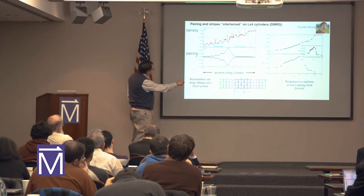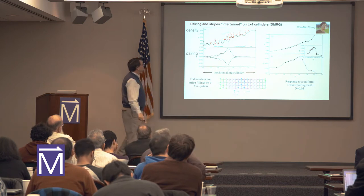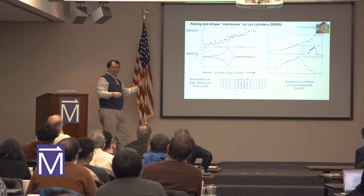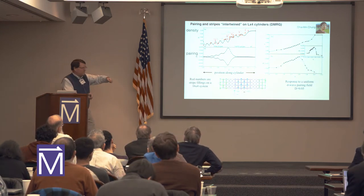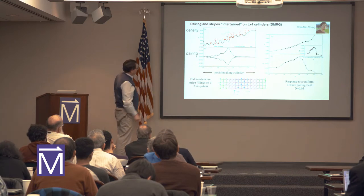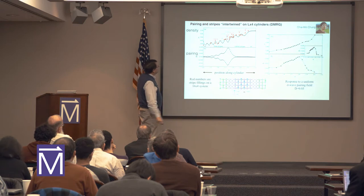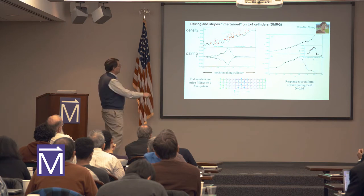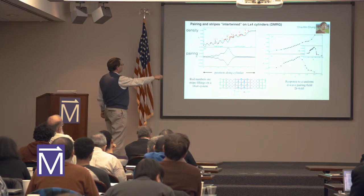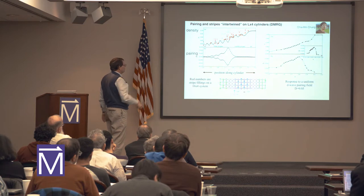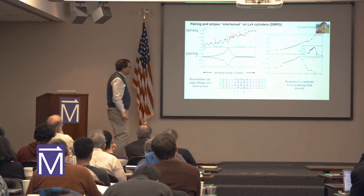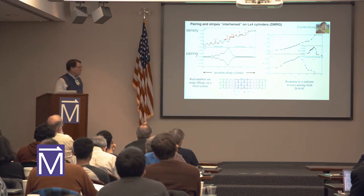Below is shown the pairing response to this system, with two curves showing the pairing along x-links versus y-links. The fact that they're mirror images with opposite sign shows that it's D-wave pairing. You have this big peak right at the transition between the filled stripes and the half-filled stripes. It gives a surprisingly non-negligible result over in the filled stripe section, but I think the most significant thing is the big response you get right at the boundary between the half-filled and filled stripes.